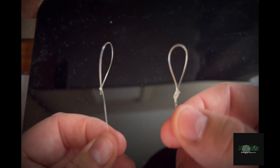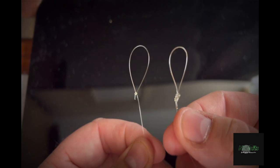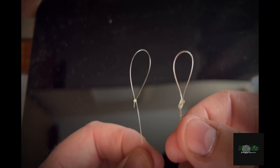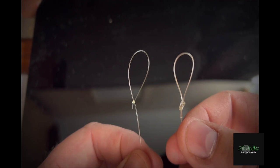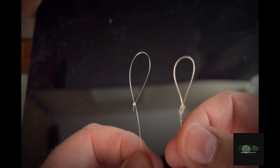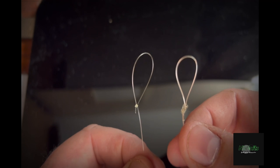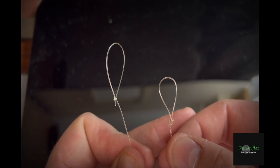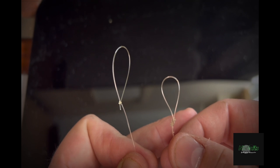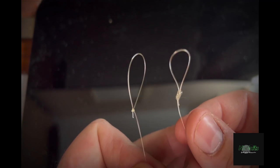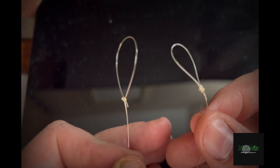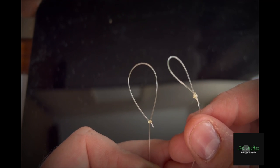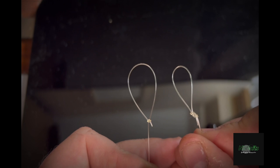I'll hold them up together now. Figure of eight loop, and you can see straight away on the left is the perfection loop knot. A lot easier to see that the knot is a lot less cumbersome, it's a lot neater, a lot straighter. And again, works very well for those people who are looking to use perhaps loop attachments for the hinge stiff rigs and various other methods.